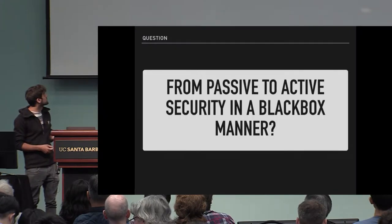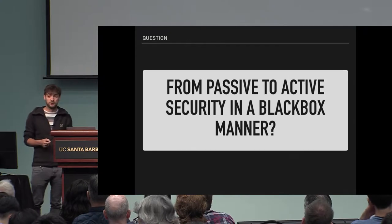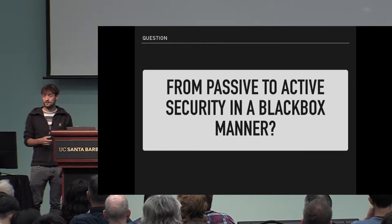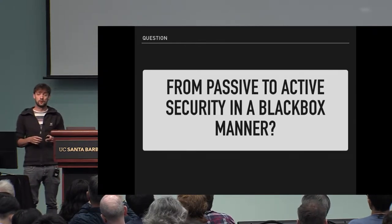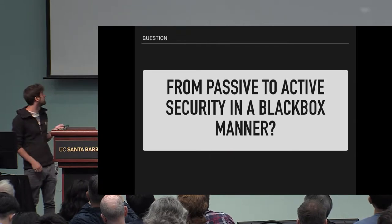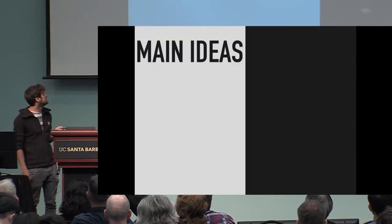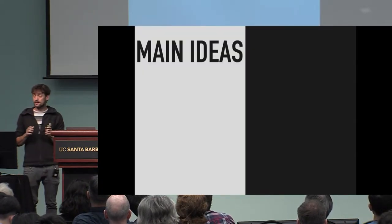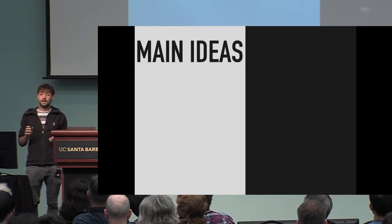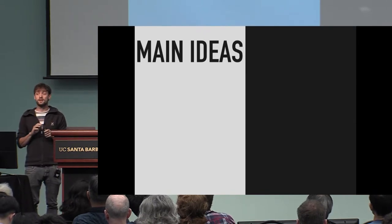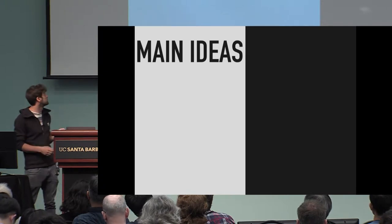Let's start with the first question: how can we go from passive to active security in a black box manner? Black box manner means we cannot look at the specifics of how the protocol works — we need to find some generic way. For the sake of this talk, we focus on three parties and want a protocol secure against one active corruption.